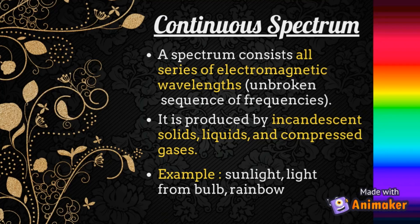A continuous spectrum is a spectrum that consists of all series of electromagnetic wavelengths. It is produced by incandescent solids, liquids, and compressed gases.